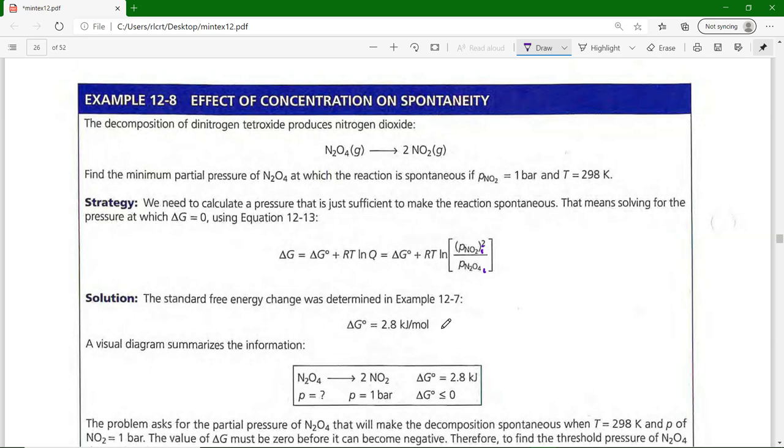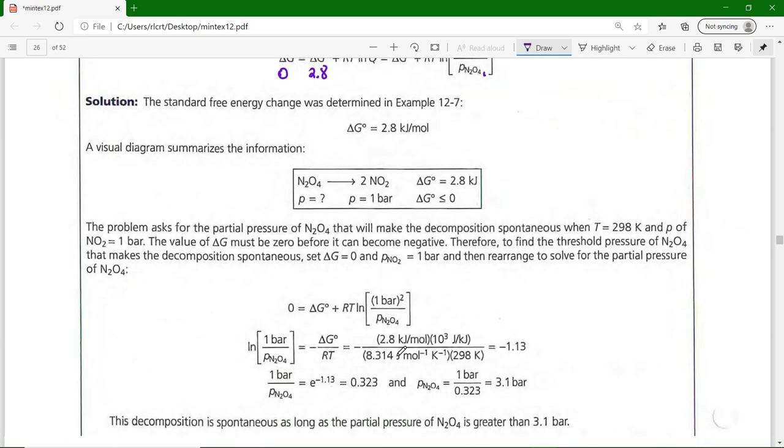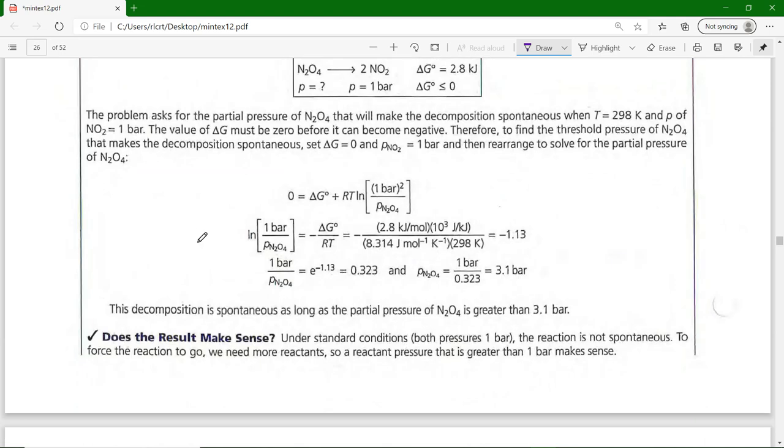We already got the standard free energy at 298 kelvin, which is 2.8 kilojoules. So this is 2.8, ΔG° is 2.8, R is 8.314, the temperature is 298. We want to just make it spontaneous, so we'll set ΔG to zero.